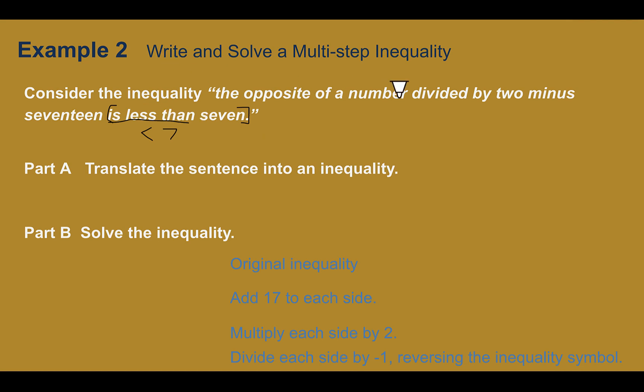The opposite of a number. So that would mean that it's negative of a number divided by 2 minus 17. What would this look like altogether? So -x/2 - 17 < 7. Sometimes it helps to say it out loud or continue to read it over and over as you are writing it so you get the correct translation.